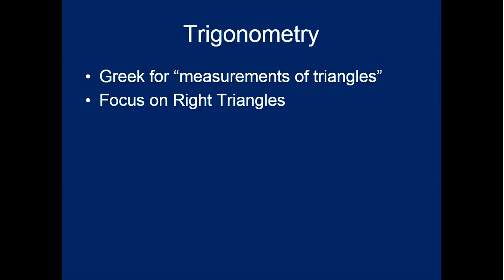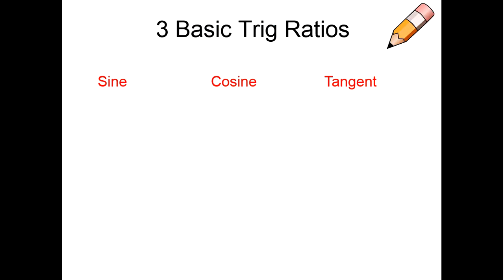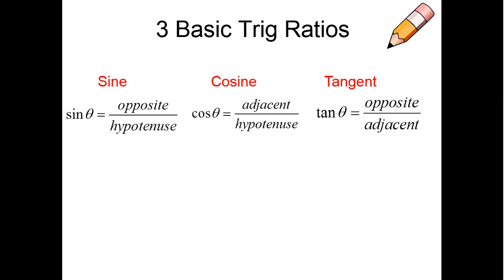We're going to focus on right triangles with sine, cosine, and tangent. Sine was the opposite over the hypotenuse of a right triangle. The cosine was the adjacent side over the hypotenuse. And the tangent was the opposite over the adjacent side.